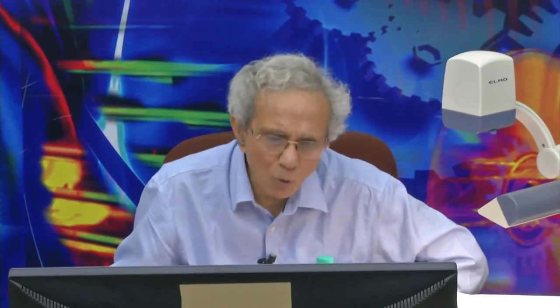For white light interference, white light spans 400 nm to 700 nm with maximum eye sensitivity at about 550 nm. The spectral width on either side is about 150 nm, and using the formula λ²/δλ, the coherence length is just 3 to 4 wavelengths. This is the maximum number of fringes visible on both sides in an interference pattern, which is what makes the idea of coherence extremely important.